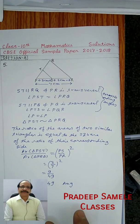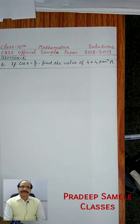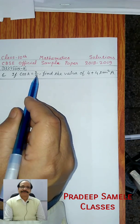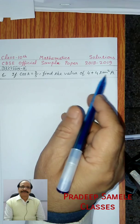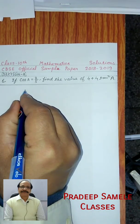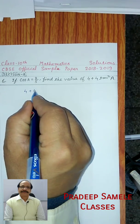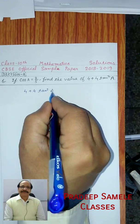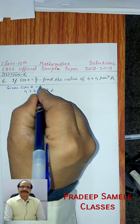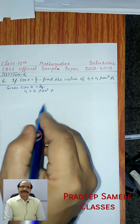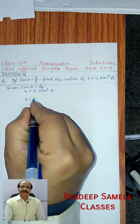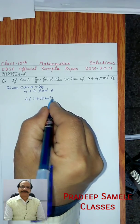Now we are going to do section A, last question — question number 6. If cos A is equal to 2 upon 5, find the value of 4 + 4tan²A. So cos A is equal to 2/5 and we need to find 4 + 4tan²A. We know that 1 + tan²A equals sec²A.